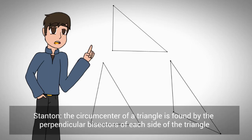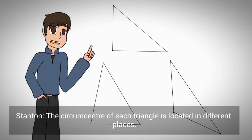The circumcenter of a triangle is found by the perpendicular bisectors of each side of the triangle. The circumcenter of the triangle is located in different places.